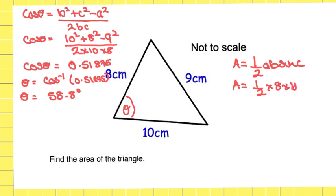The area is equal to 40 times sine 58.8. So the area is equal to 34.2 centimeters squared.